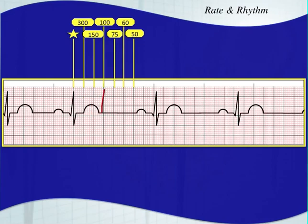If your QRS complex was here, you would have one, two, three big boxes: 300 divided by three is 100 beats per minute. If there were four large boxes in between, it would be 300 divided by four, which is 75 beats per minute. Then the next would be 60 beats per minute, and then 50 beats per minute.